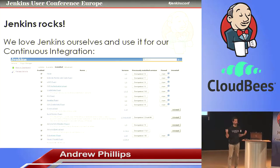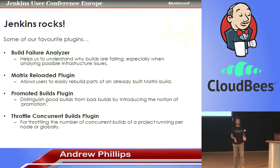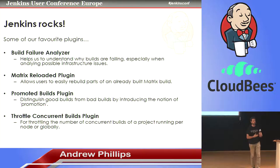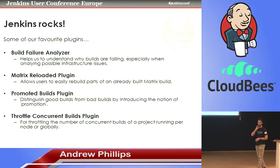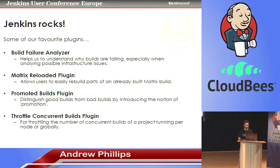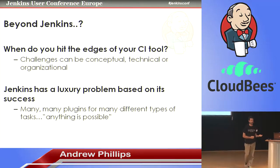Having said that, we love Jenkins. At my day job, at all the open source projects I work on, we use Jenkins extensively. This is a screenshot I just took of some of the plugins we use. We use Jenkins for continuous integration, because CI is what I would consider the sweet spot of Jenkins. If you look at the out-of-the-box support and the domain model, continuous integration is really the thing that Jenkins is particularly good at. Things like build failure analysis, the Throttle Concurrent Builds plugin — thank you very much Andrew if you're in the audience. At some point you will hit the edges of your CI tool if you're doing CI, but it could be any CI tool.